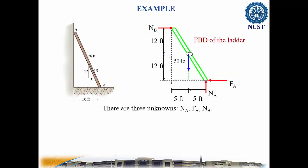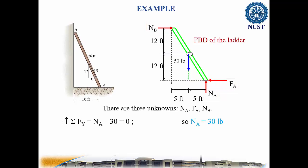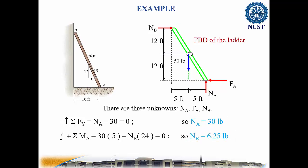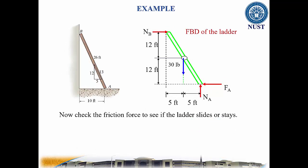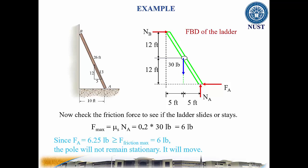The free body diagram of the ladder is shown here. There are three unknowns: N_A, F_A, and N_B. Using the three equations of equilibrium, we get N_A equal to 30 pounds, N_B equal to 6.25 pounds, and F_A equal to 6.25 pounds. Now, checking the friction force to see if the ladder slides or stays: the maximum friction force equals mu_S times N_A, which equals 6 pounds. Since F_A of 6.25 pounds is greater than the maximum friction force of 6 pounds, the pole will not remain stationary and it will move.